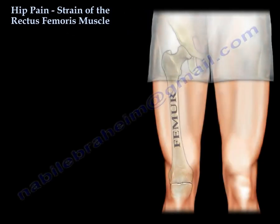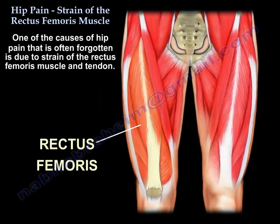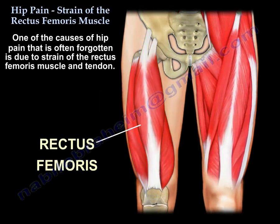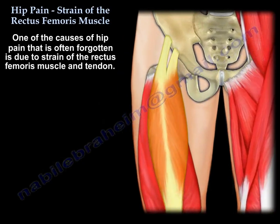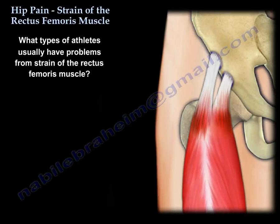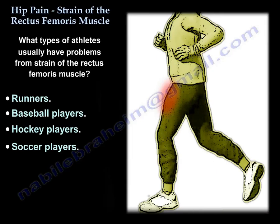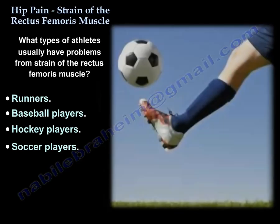Hip pain: a strain of the rectus femoris and its anatomy. One of the causes of hip pain that is usually forgotten is a strain of the rectus femoris muscle and tendon. It causes groin pain or anterior hip pain in some athletes — runners, baseball players, hockey players, and soccer players.